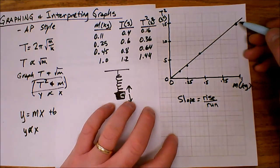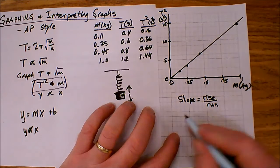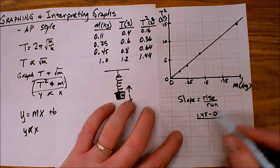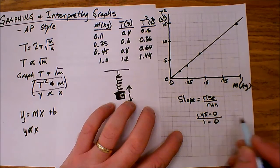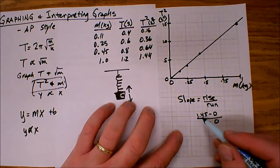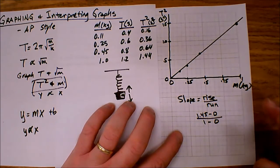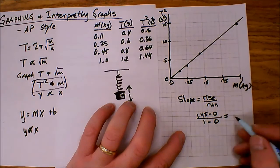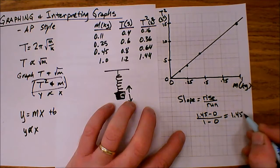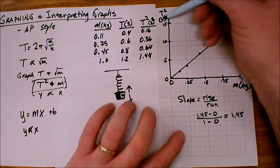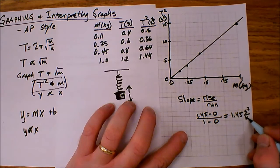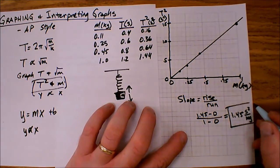So my slope is going to be 1.45 minus 0 divided by 1 minus 0. Again, you want to show that calculation of the slope whenever you have a graphing problem on a free response section of the AP exam. So I show that calculation and my slope is about 1.45, and the units of that slope will be rise over run. So second squared over kilograms. That is my slope.